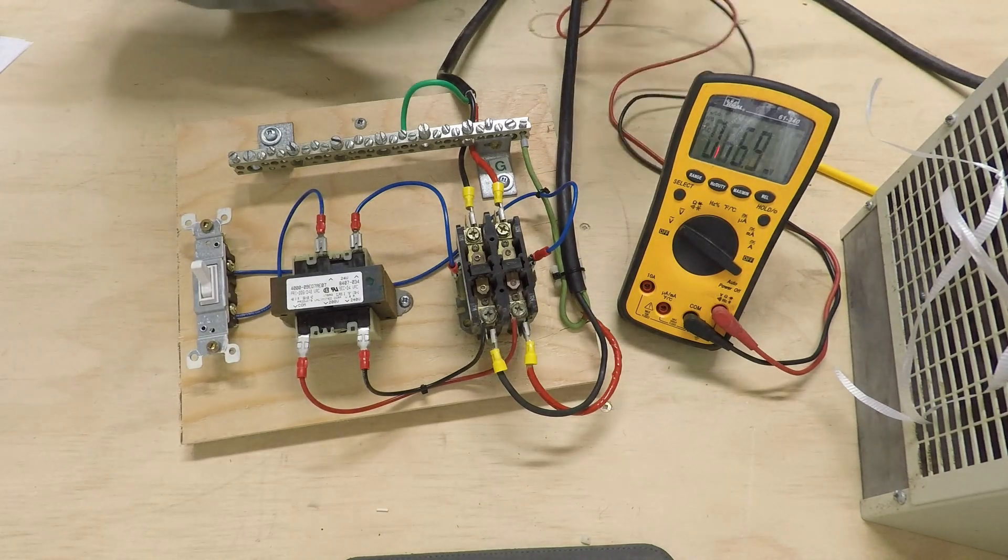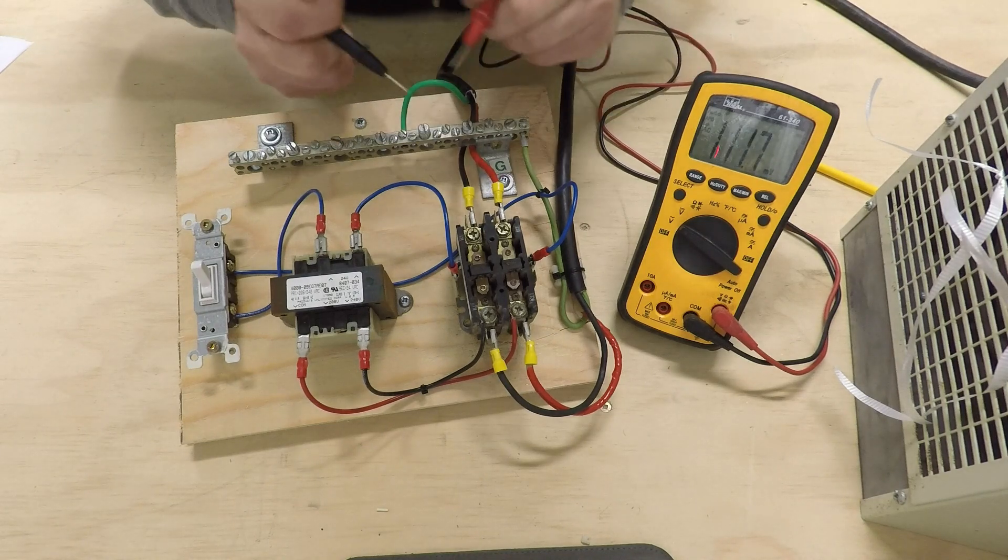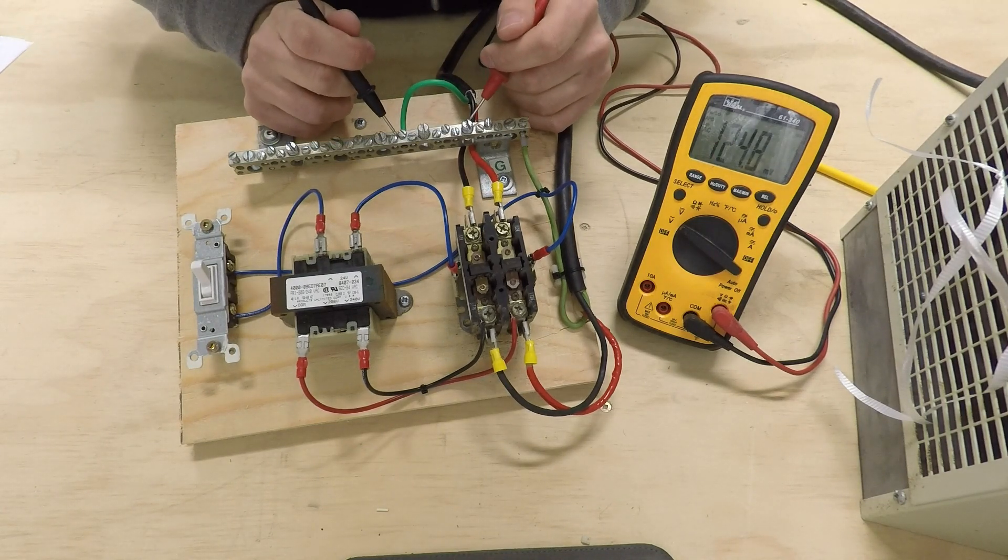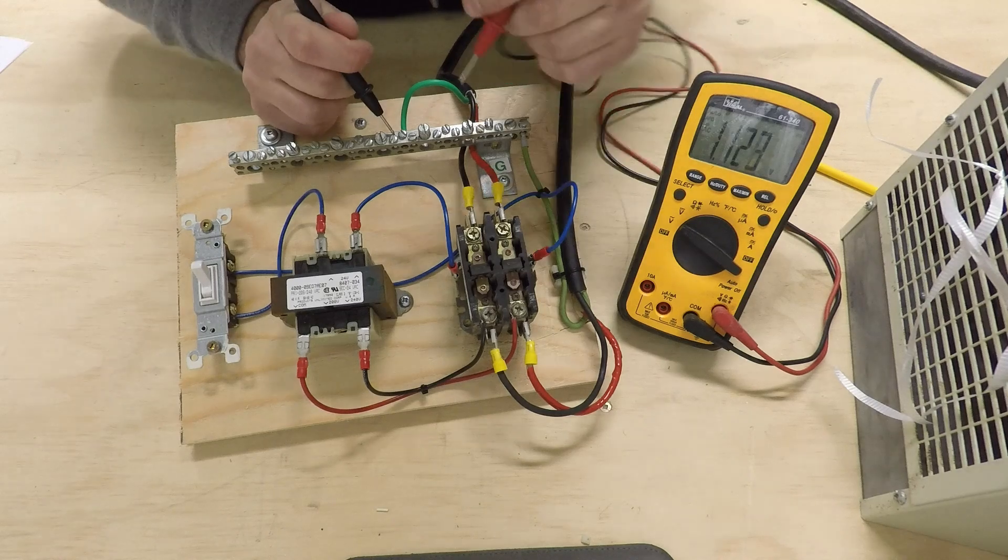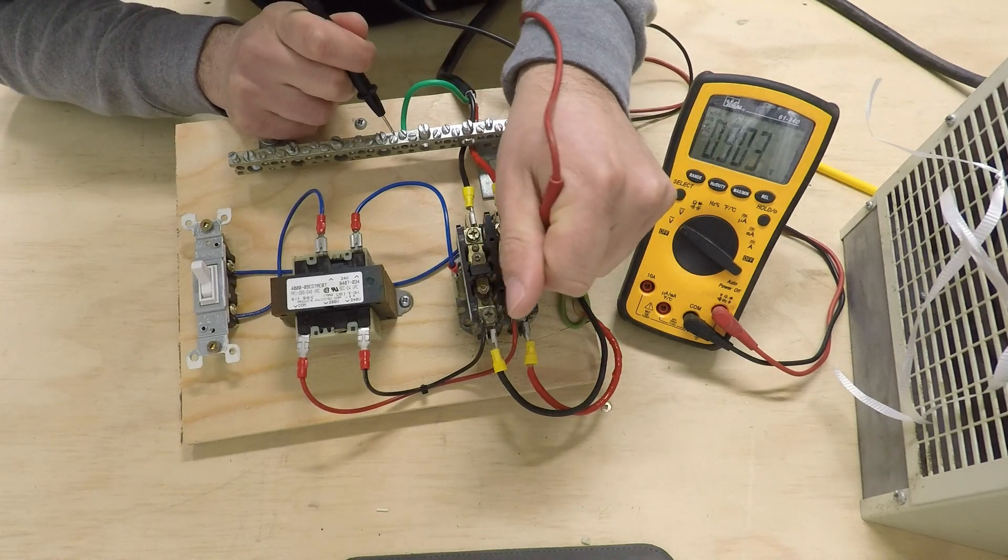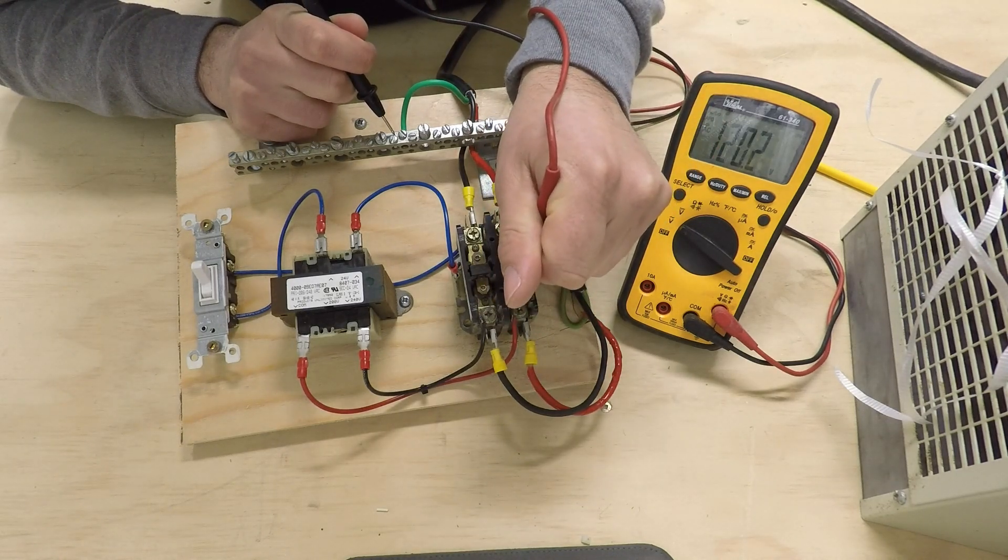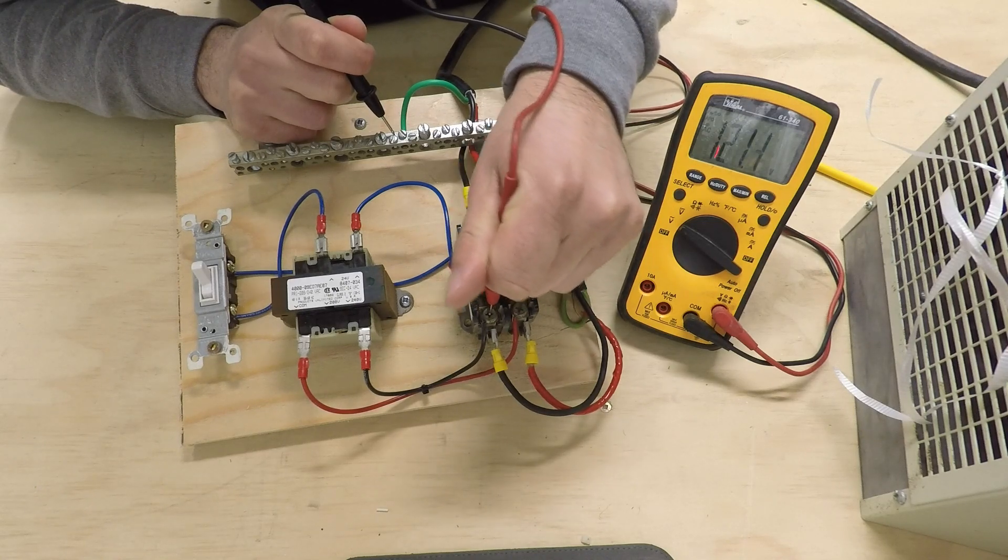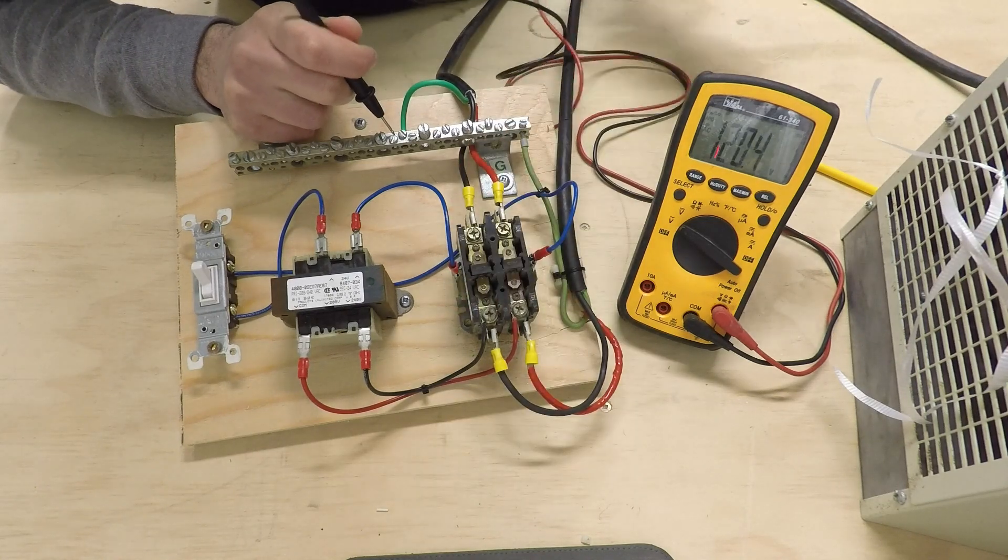So you're going to take a couple of measurements here. And I'm going to show you where people sometimes get a little bit confused with this measurement because it's kind of misleading. So coming in, I've got approximately 120 and on my other phase, I've got 120. That's where you get your 240.